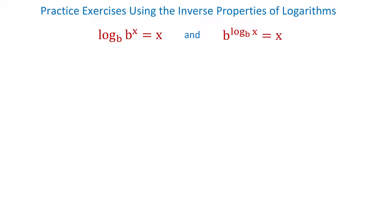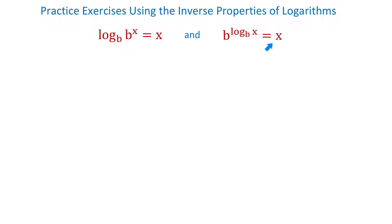In the second property, the base b is raised to the exponent log base b of x, and the result is x. So when this base is the same as this base, then this result is the same as this result.